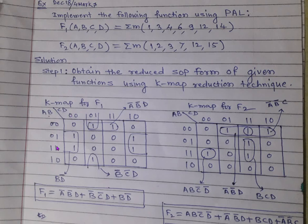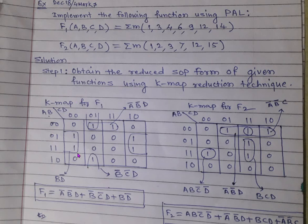Step one: obtain the reduced SOP form using KMAP reduction. Fill the KMAP for F1 with inputs A, B, C, D (using Gray code ordering). Place 1s at the corresponding minterms — including positions 1, 3, 4, 6, 9, 12, 14 — and 0s elsewhere. After grouping, for one group B is 1, C varies (cancels), and D is 0, giving B·D̄. Writing down all terms, we get the expression for F1.